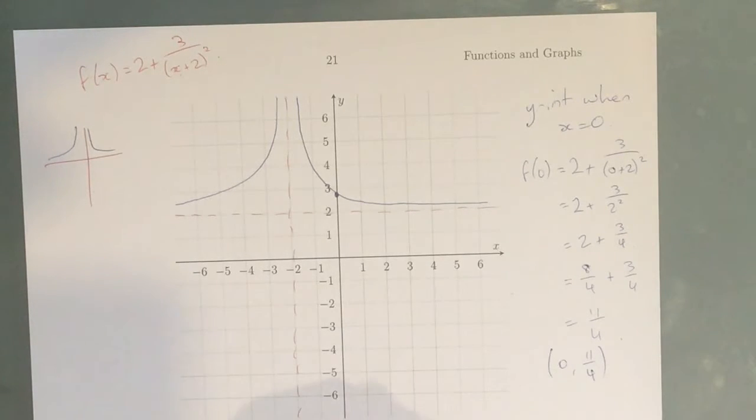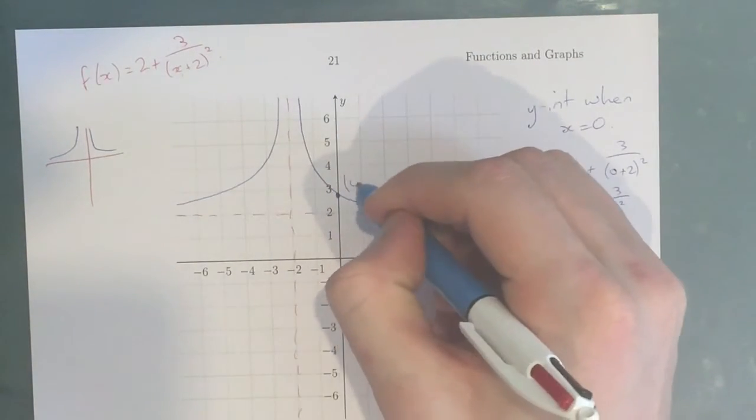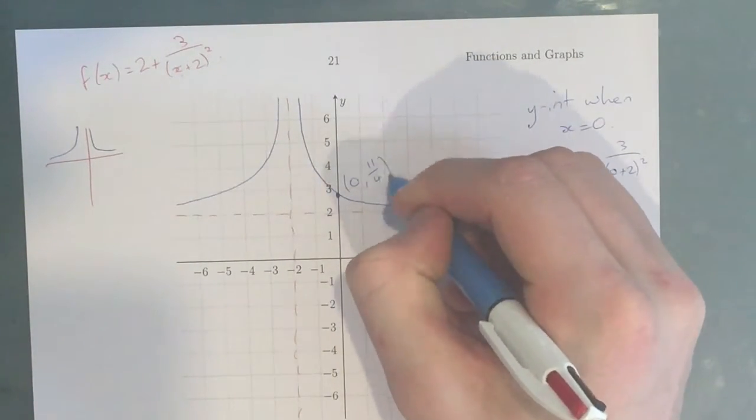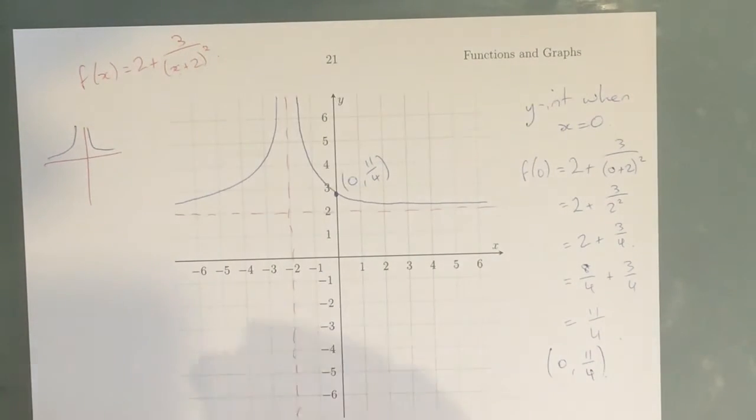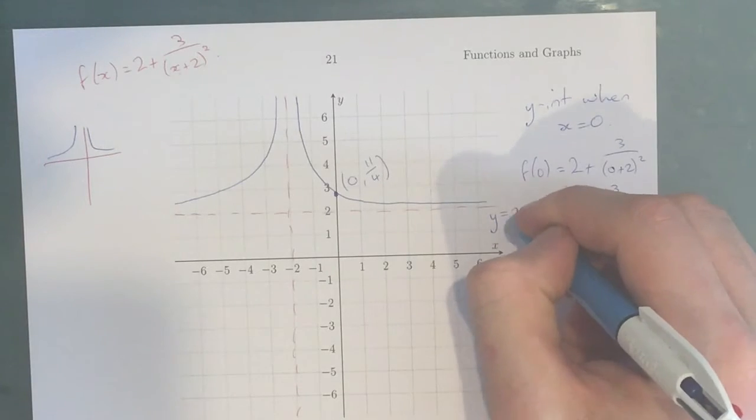So, is our graph finished? No. Label everything. So we've got our y-intercept here, which, like we said before, was (0, 11/4). We've got our asymptotes, which is x equals negative 2 and y equals 2.